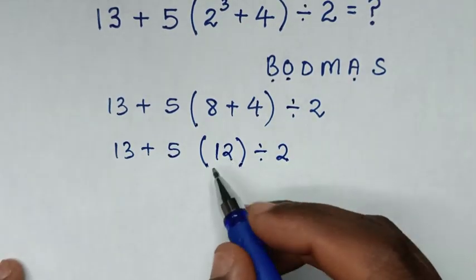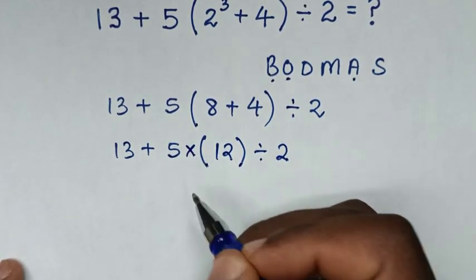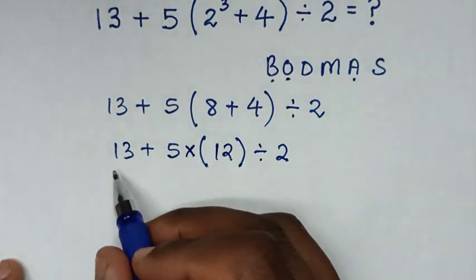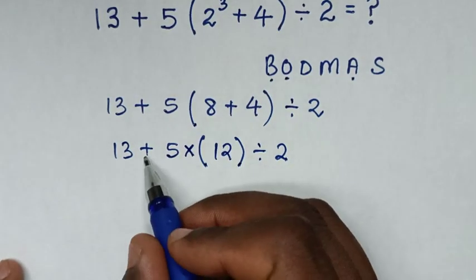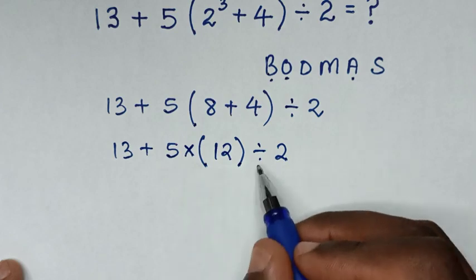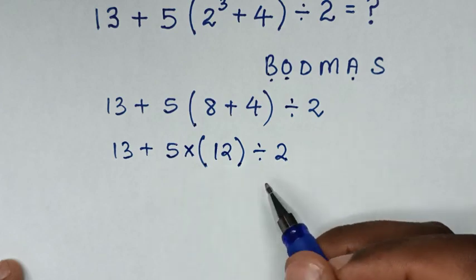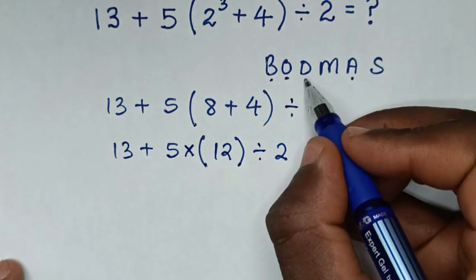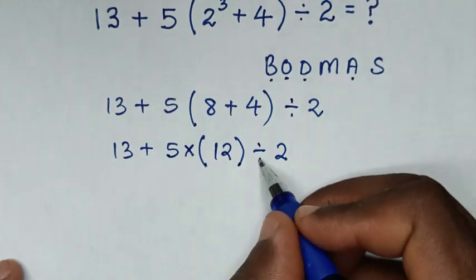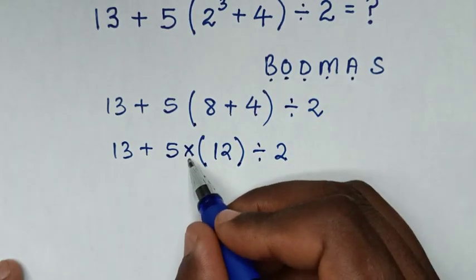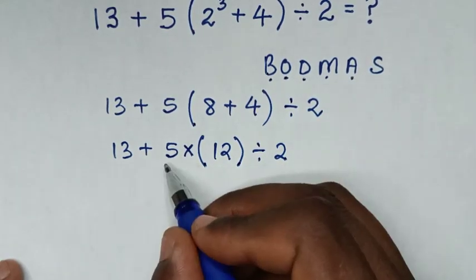Then between 5 and 12, we have multiplication sign. So in here, we have operation of addition, multiplication, and division. We have division here, multiplication is this, and addition this one.